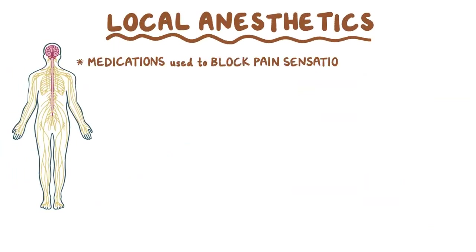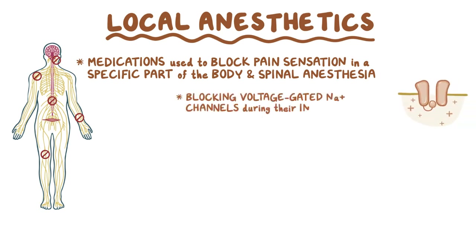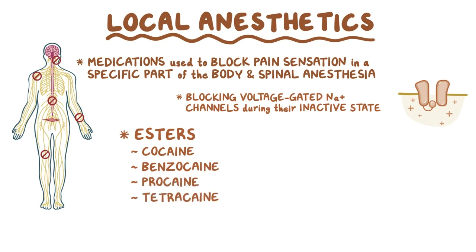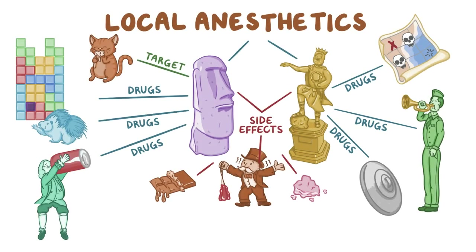As a quick recap: local anesthetics are medications used to block pain sensation in a specific part of the body for small surgical procedures and spinal anesthesia. They work by blocking voltage-gated sodium channels during their inactive state. There are two classes — esters, which include cocaine, benzocaine, procaine, and tetracaine, and amides, which include lidocaine, mepivacaine, and bupivacaine. A mind map with all the mnemonics is shown — pause the video to test yourself and see what you remember.